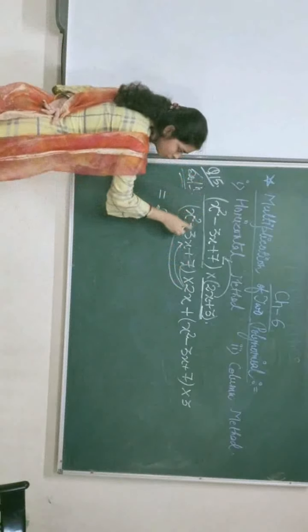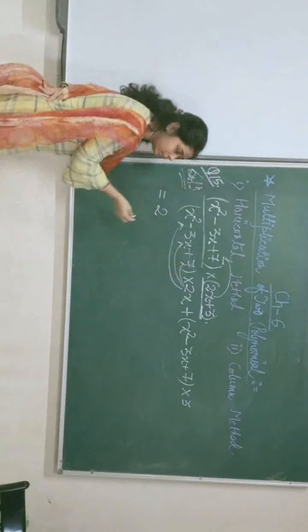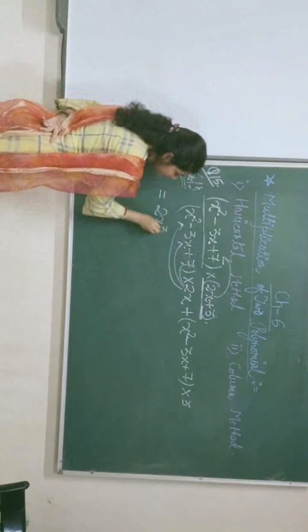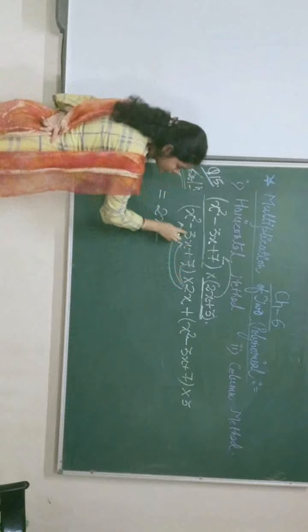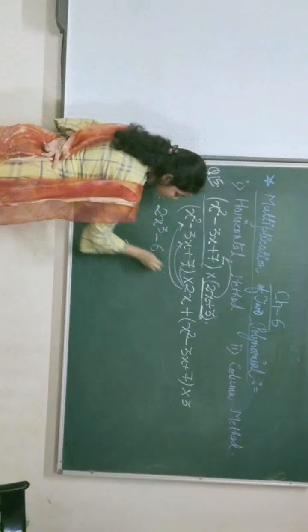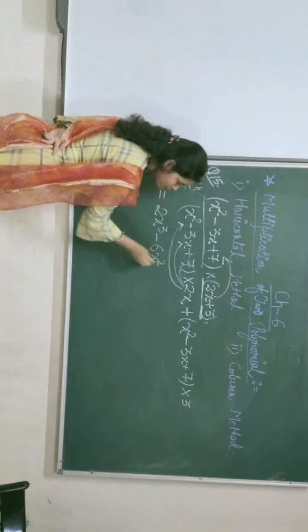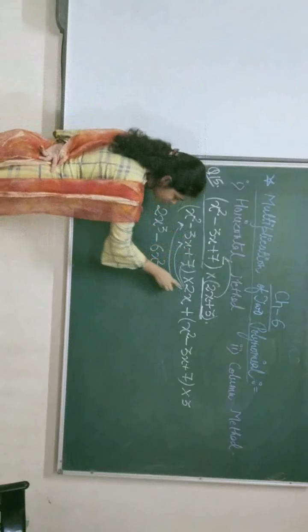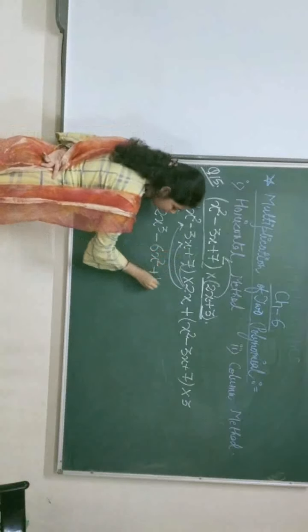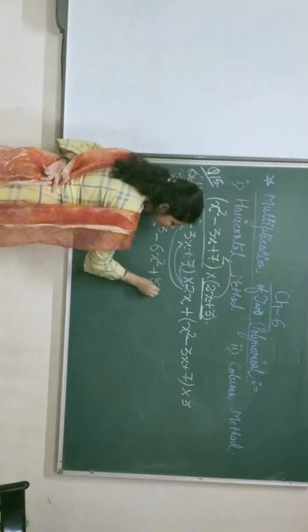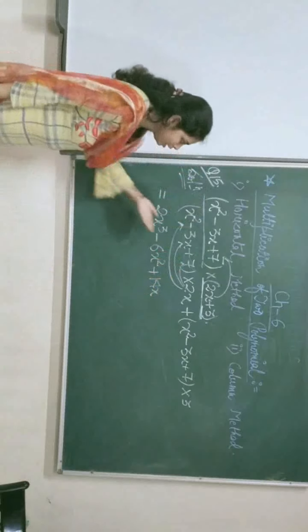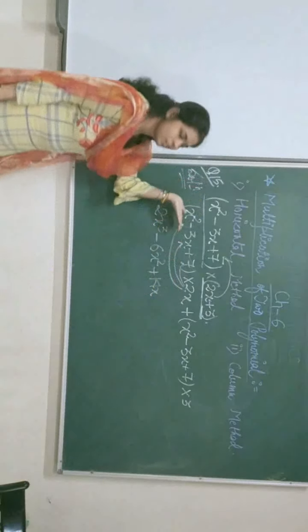We multiply this term with this polynomial. On multiplying, we get 2 and x squared into x equals x to the 4. Minus 2 into 3 is 6, and x into x equals x squared. After that, plus 7 into 2 makes 14 and x. We multiplied this term with this polynomial.